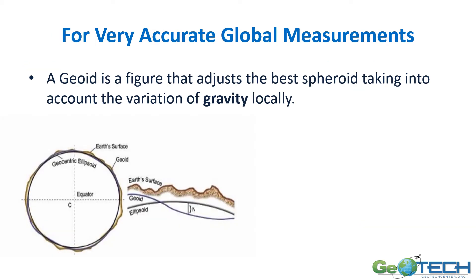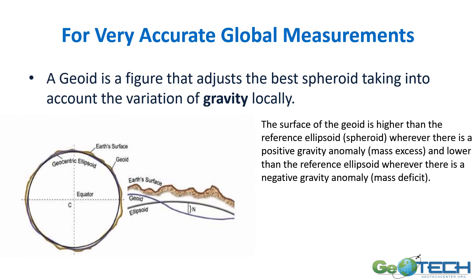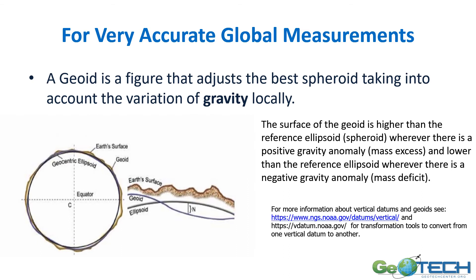For very accurate global measurements we actually use a geoid figure, which adjusts the best-fit spheroid by taking into account the variation of gravity locally. The geoid is higher than the local reference spheroid wherever there is a positive gravity anomaly or mass excess, and lower than the reference ellipsoid where there is a negative gravity anomaly or mass deficit. For more specific information on vertical datums and geoids, there is a really good link to NOAA.